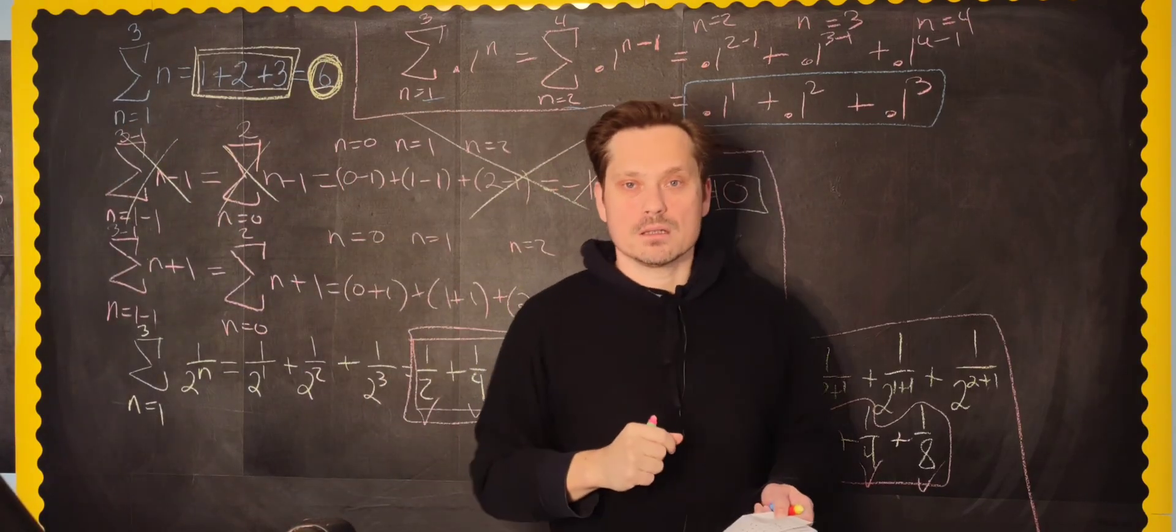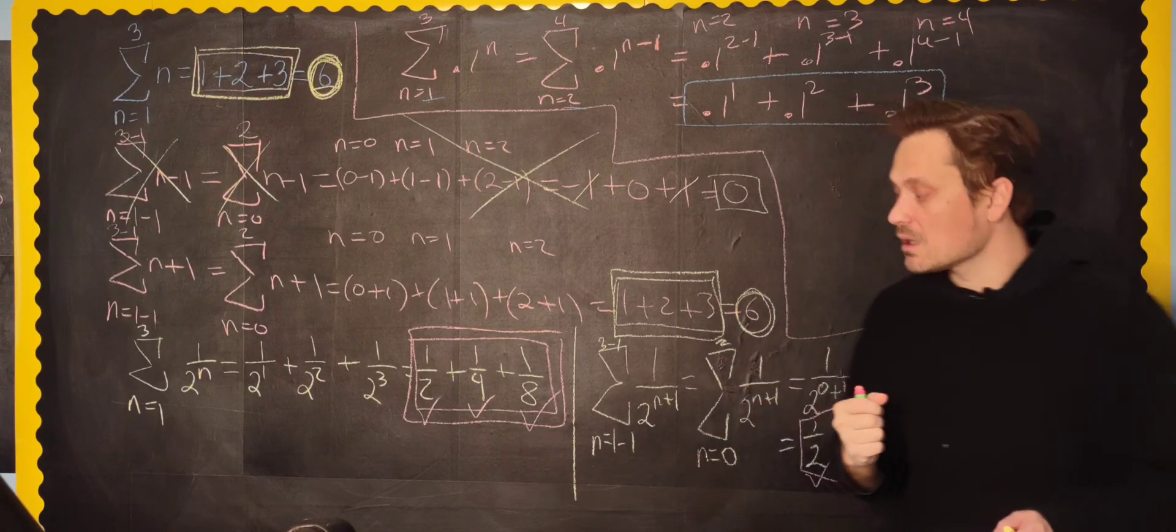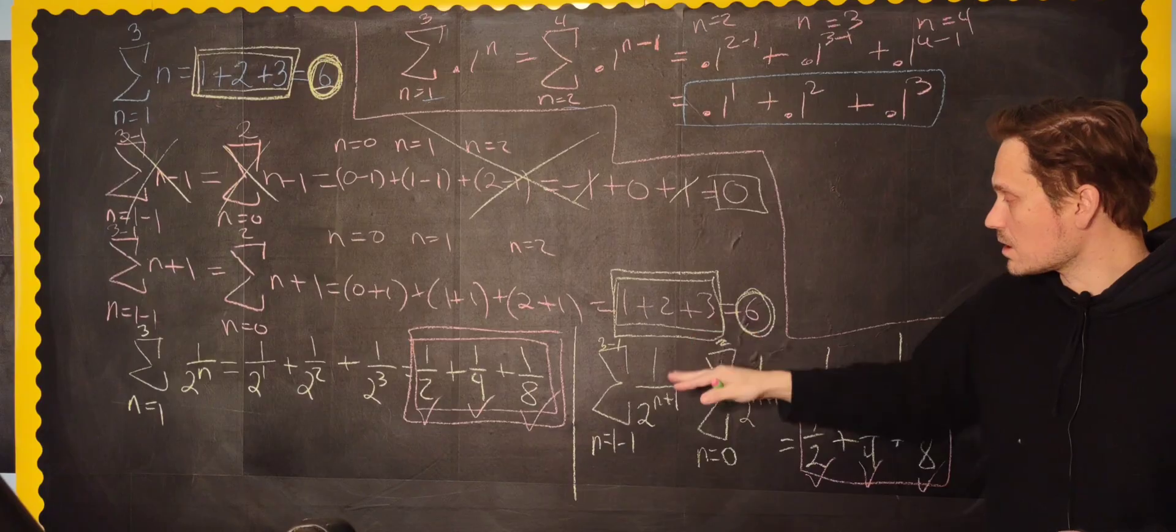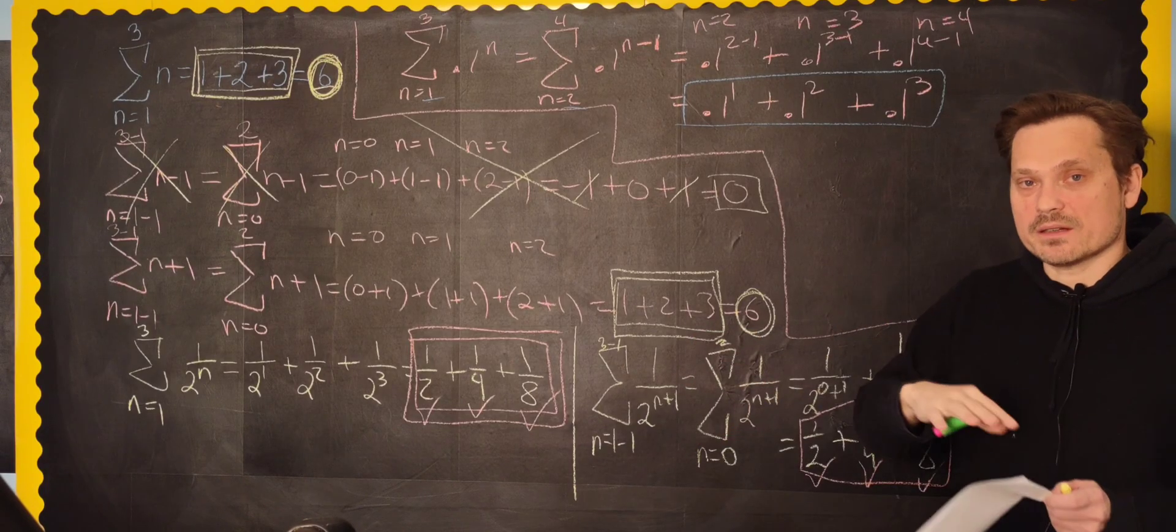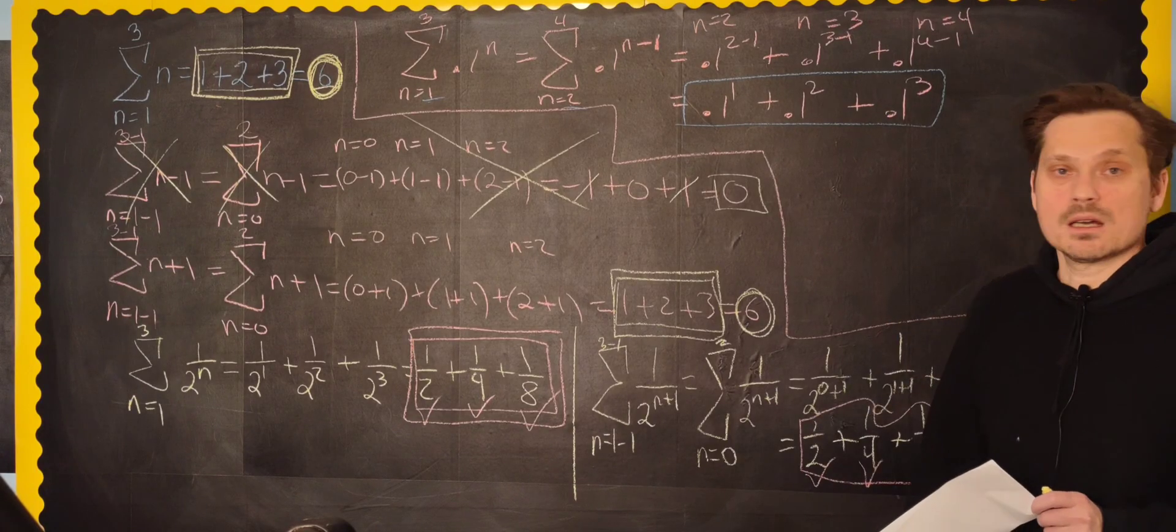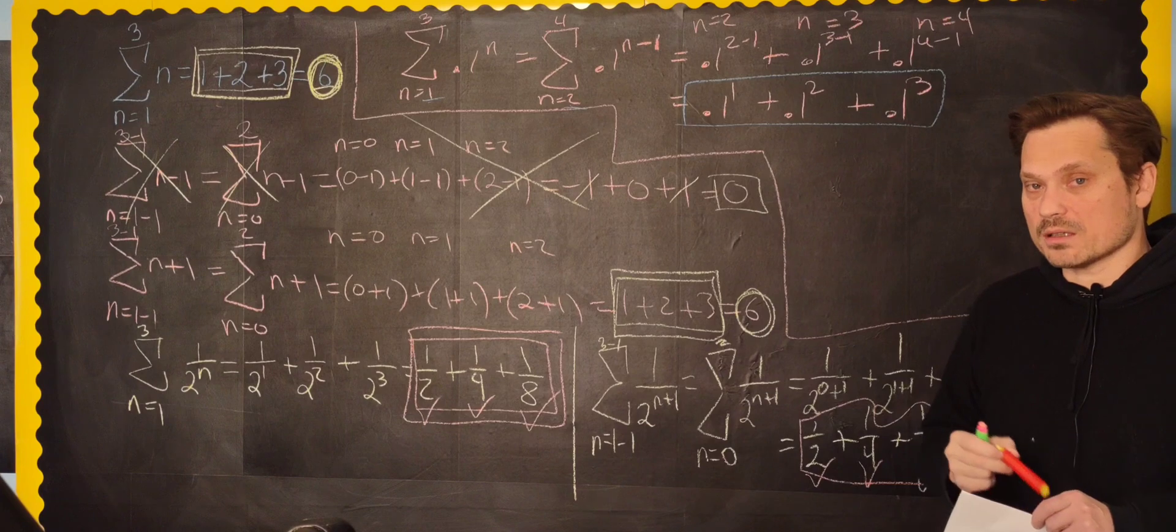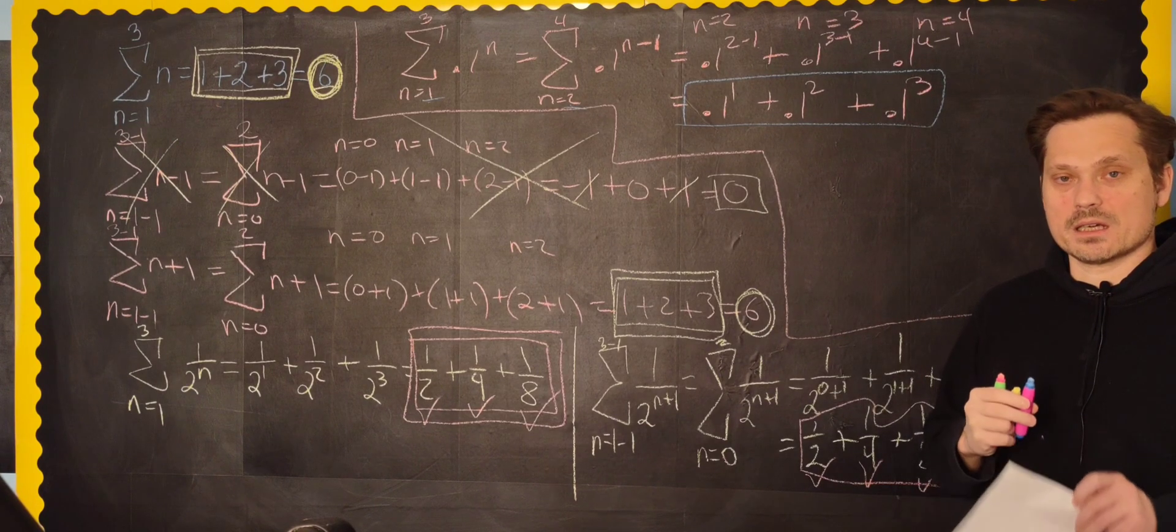So you can shift the index any way you want, in fact. By any number that you want. You just have to make, accordingly, changes in the variables that you have as part of the expression that define what you're adding up. That's all I want to say here. Please leave a like, please subscribe. I hope all of this is helpful. Leave some comments down below. I'll see you in another video. Bye-bye.